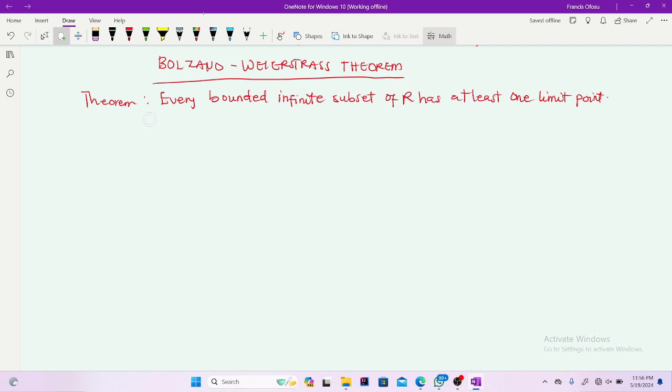So if this is the first time you've been on this channel, can't be subscribed to support and please watch this video to the end. So the theorem is saying every bounded set, every bounded infinite, take note, so every bounded infinite subset of R has at least one limit point.